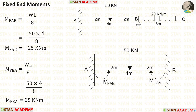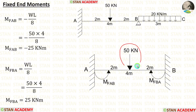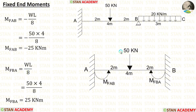Now we are going to find the fixed end moments. There is no need to calculate fixed end moments for the overhanging span — only for span AB. In span AB there is a point load of 50 kN at the center. The formulas are minus WL/8 and positive WL/8. With W equals 50 and L equals 4, we calculate MFAB and MFBA.